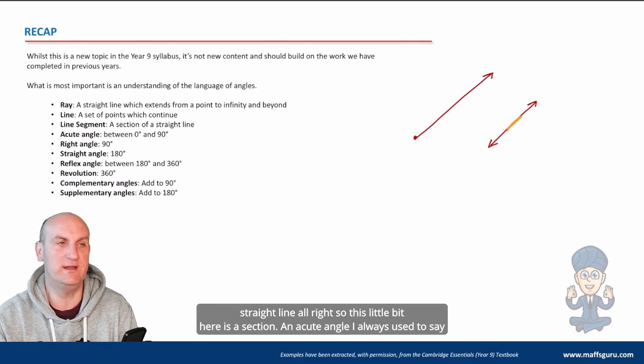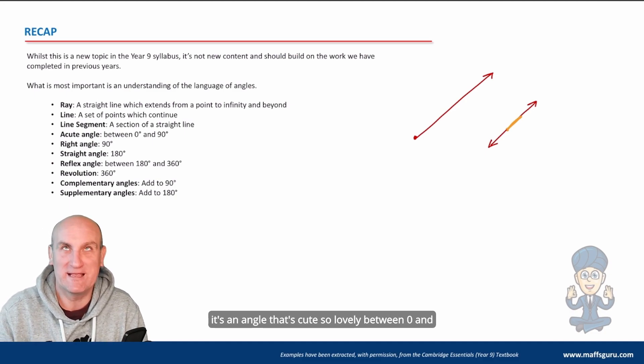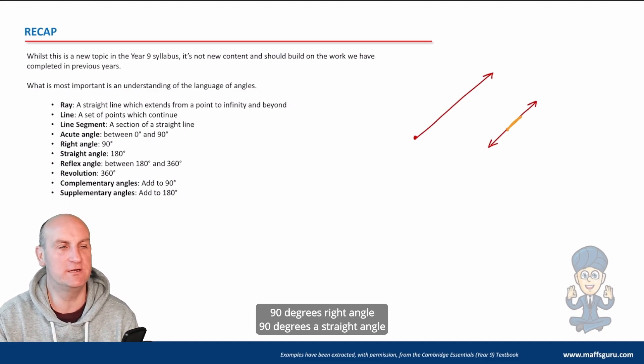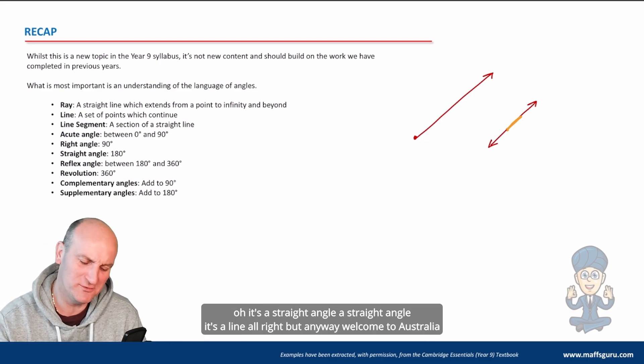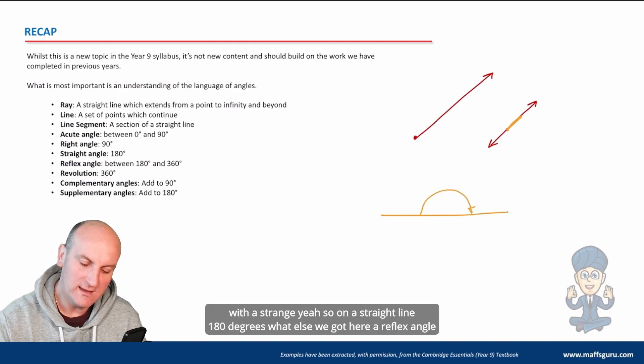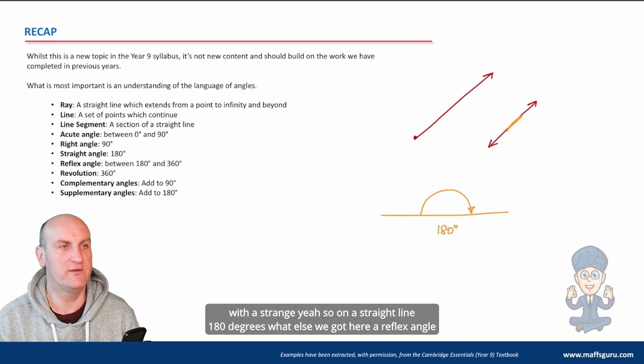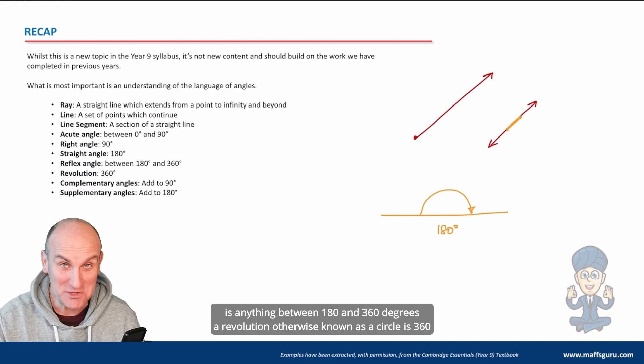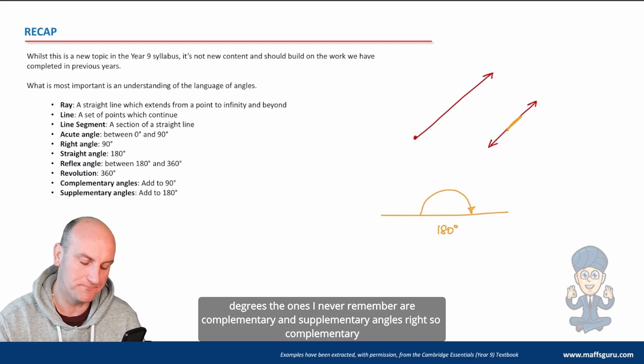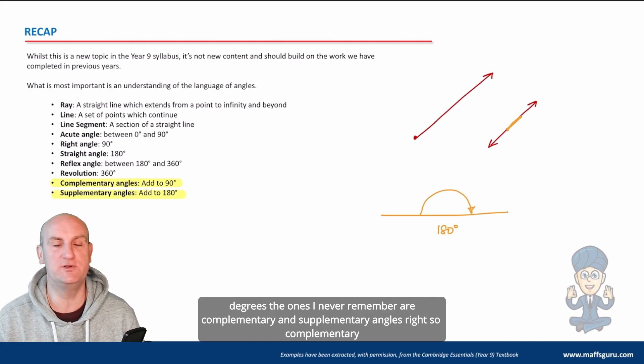An acute angle, I always used to say it's an angle that's cute, is between 0 to 90 degrees. Right angle is 90 degrees. A straight angle is on a straight line, 180 degrees. A reflex angle is anything between 180 and 360 degrees. A revolution, otherwise known as a circle, is 360 degrees.